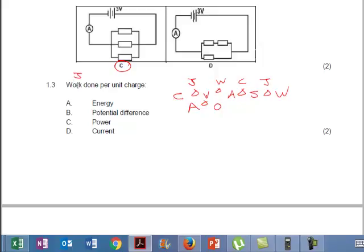And the reason I tell you this is because they want work done per unit charge. Now work is measured in joules. And charge is measured in coulombs, which is a C. So we want to know what is joules divided by coulombs. And joules divided by coulombs is volts. So therefore the correct answer is volts. But volts is known as potential difference. The correct answer here is B.